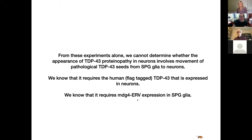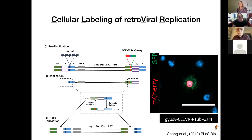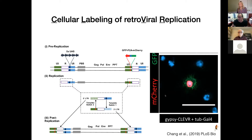I want to advance the idea that the viral ancestry or evolutionary relationship of these endogenous retroviruses and retrotransposons may be important. We previously published a reporter system that turns on nuclear cherry and membrane GFP — not when this endogenous retrovirus is merely expressed, but when it goes through an RNA intermediate, copies into a cDNA, and reinserts into a de novo chromosome location. We can detect those replication events by turning on these fluorophores.